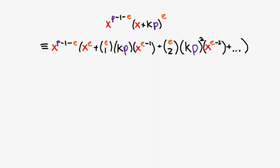A lot of these terms are multiples of p squared, which we can remove, leaving us with this. Simplifying more, we get the following.